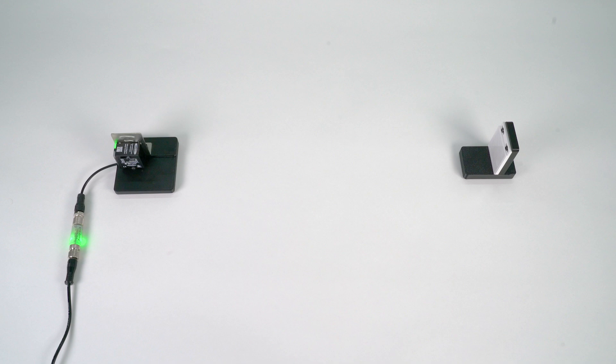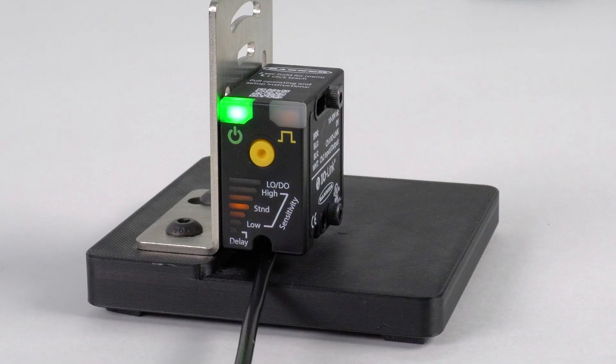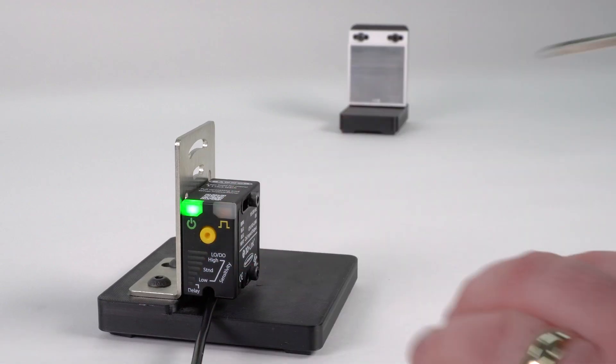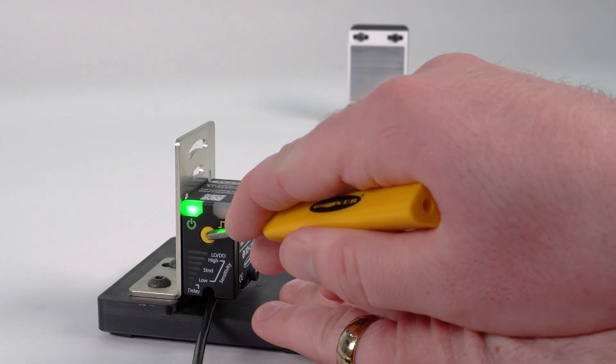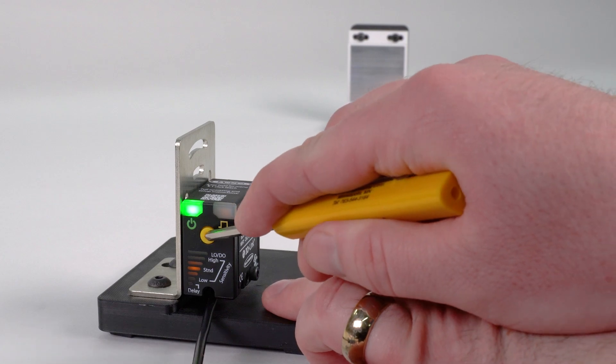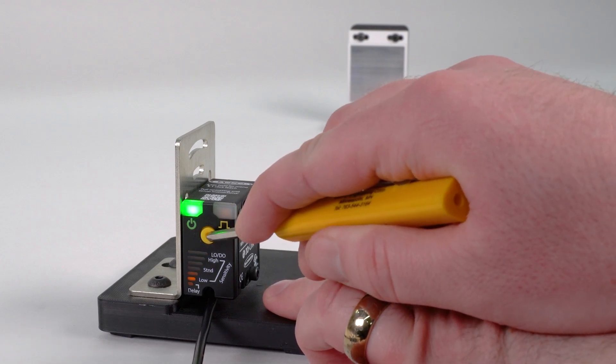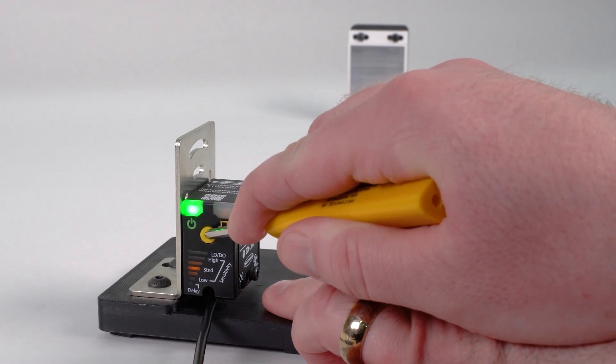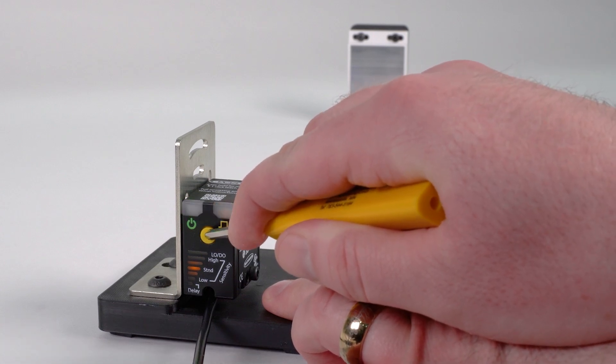The B25 also allows you to select from three sensitivity modes: low, standard, and high. To change the sensitivity, begin by putting the sensor into configuration mode and then push the button three times. By default, the sensor will be set to standard sensitivity. Press the button to toggle between the options and the bar graph will change to indicate which level is selected. Press and hold the button to select the desired sensitivity level.